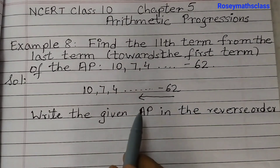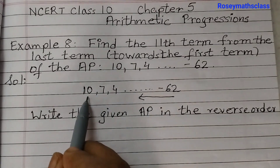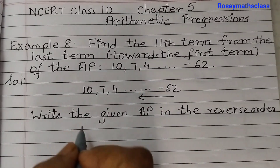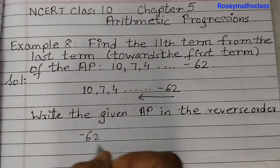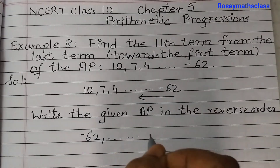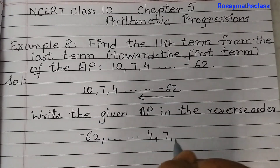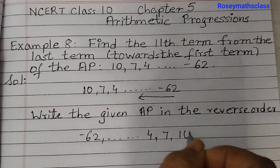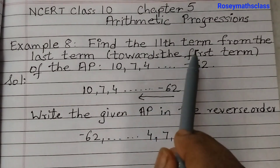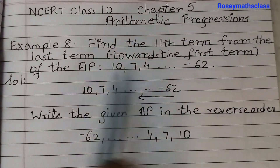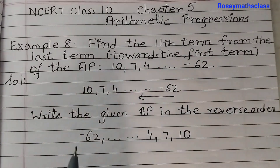When we write it in reverse order, minus 62 will be the first term and 10 will be the last term. So the reversed AP is: minus 62, then 4, 7, 10. Because they have asked for the 11th term from the last term towards the first term.